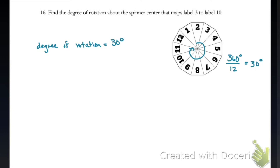And so now all I need to do is think, well, how many triangles map label 3 to label 10? And so if I do that, I can go ahead and count here, I go 1, 2, 3, 4, 5. And so I take 30 times 5, I get 150 degrees. And so the angle of the degree of rotation that maps 3 to 10 would be 150. Notice that I'm counting the number of triangles as I go place to place, not from point to point.